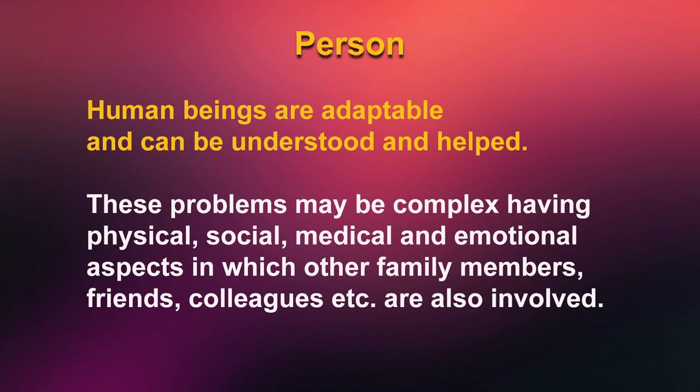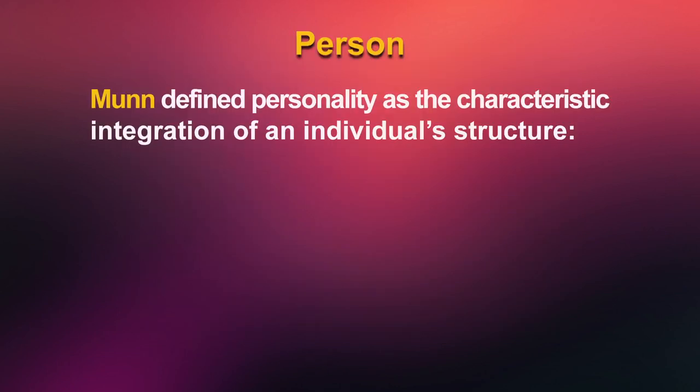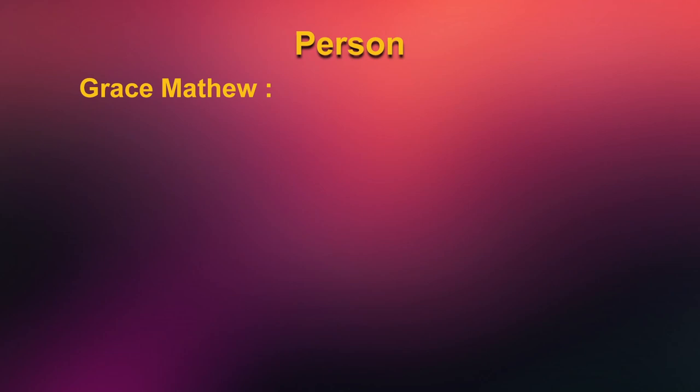These problems can be complex, having physical, social, medical, and emotional aspects in which family members, friends, and colleagues are also involved. The personality of a human being is made up of heredity and environment. Man defined personality as the characteristic integration of an individual's structure, modes of behavior, interests, attitudes, capacities, abilities, and aptitudes. To understand human behavior and individual differences, Grace Matthew has given several propositions.